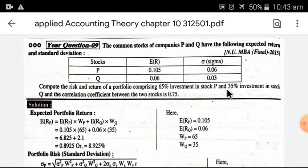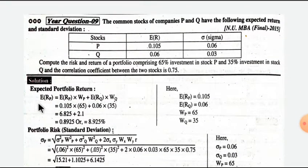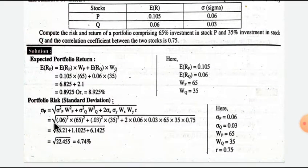For risk and return of portfolio, we need the expected return of the portfolio and portfolio standard deviation. The expected return equals expected return of P times weight of P plus expected return on Q times weight on Q.